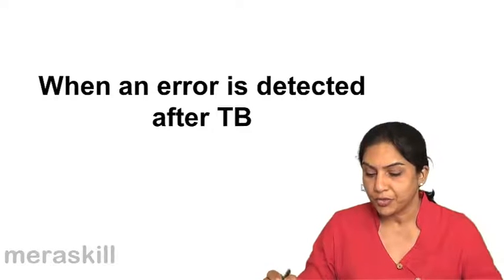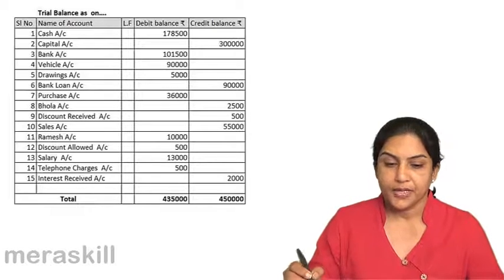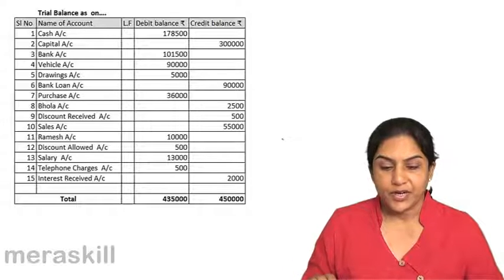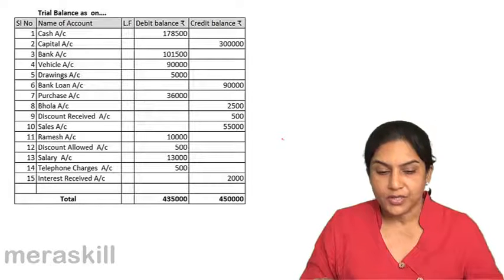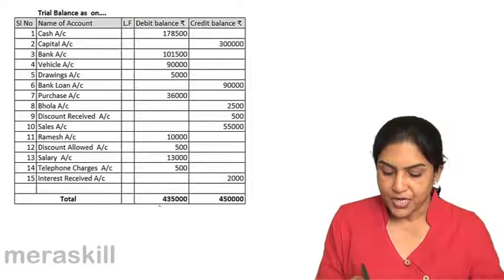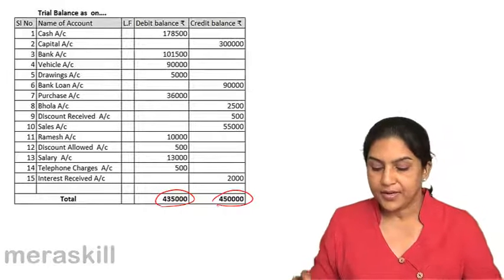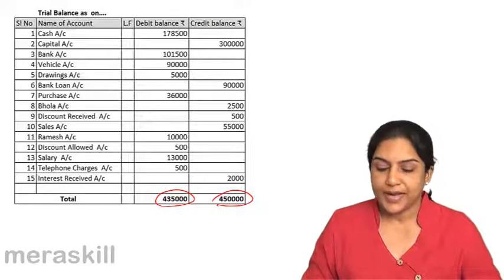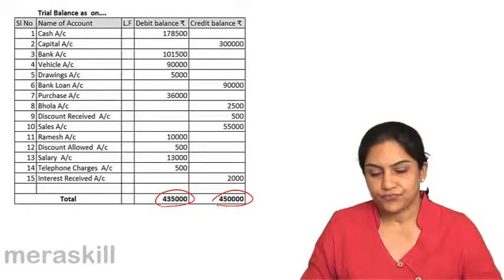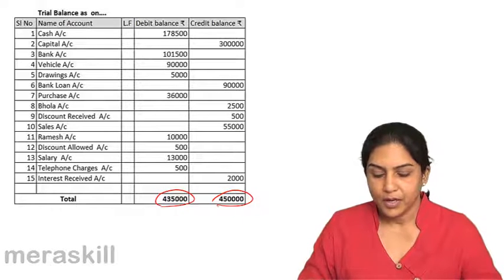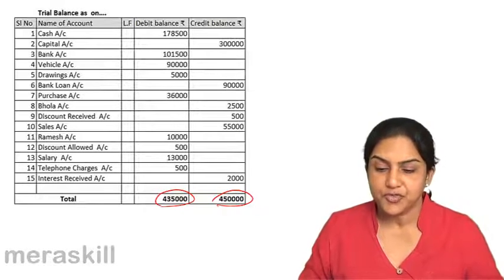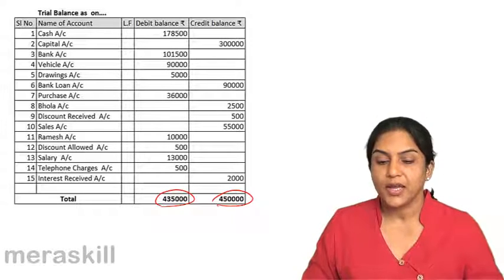So a trial balance is prepared. Look at this trial balance — an example where we have cash, capital, bank, vehicle, drawings, etc. But ultimately after recording all this, if you notice the trial balance is 4,35,000 and 4,50,000 — not tallying by 15,000. We are unable to locate this error. What has happened here is there is 15,000 less on the debit side.